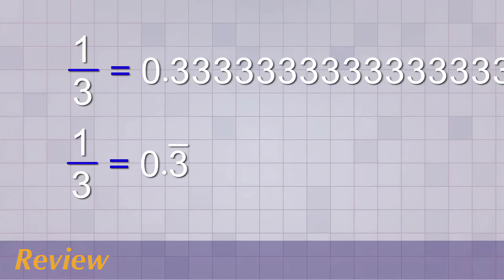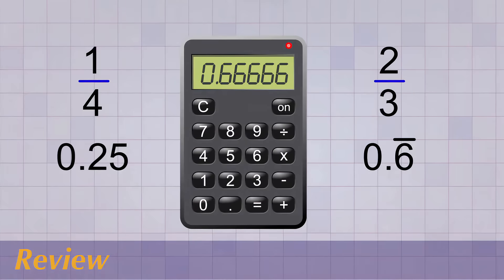Sometimes decimal division results in a pattern that keeps repeating forever. When that happens, you can draw a line over the repeating digits instead of writing them forever. Once you know how to do decimal division, I recommend that you convert fractions using a calculator since it's quicker and easier.